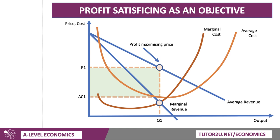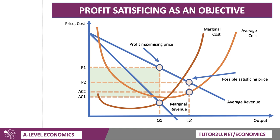So that's the profit maximising price, but there's no unique profit satisficing price. I've chosen quite a low price — that is a possible satisficing price. It's below P1 and involves a much higher output level: selling output Q2 at price P2. So they're getting a lower price per unit, but they're selling more. Their revenue goes down a little bit because marginal revenue is already negative. You can still make a profit at output Q2. The average cost at that point is AC2, so the price charged is P2 and the cost per unit is AC2 — you're still making some profit.